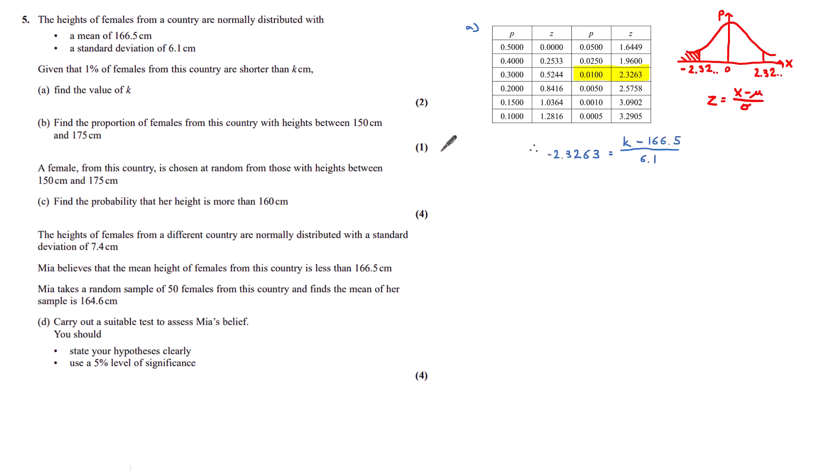For our distribution, we've got our z value just found to be minus 2.3263. We've got the value of height that we want to find, k, subtract our mean which is 166.5, divided by our standard deviation which is 6.1. Multiplying up by 6.1 and then adding 166.5, we find k to be 152.30 and so on.